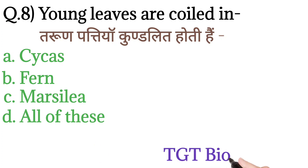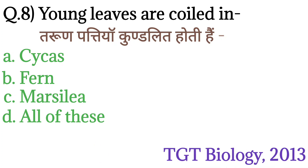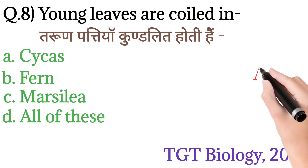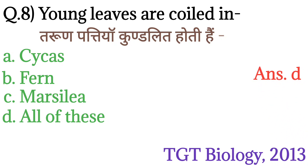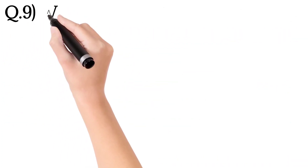This question is from TGT Biology 2013. The answer is option D: All of these — Cycas, Fern, and Marsilea, sab mein young leaves coiled hoti hain.